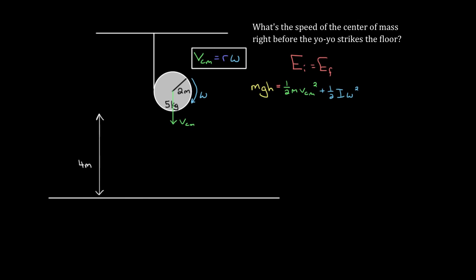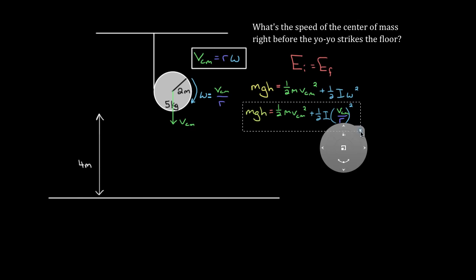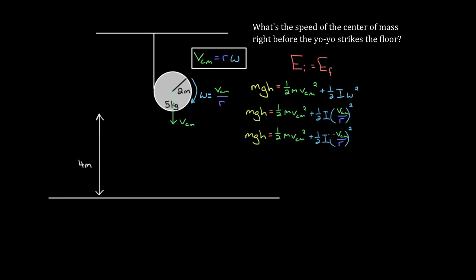We substitute omega = v-cm divided by r, and we square it, giving v-cm squared over r squared in the rotational kinetic energy term. Now we have only one unknown variable, the speed of the center of mass. The moment of inertia I might be worrying you — for a solid cylinder, the moment of inertia is one-half m r squared.